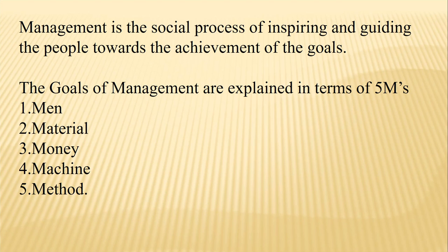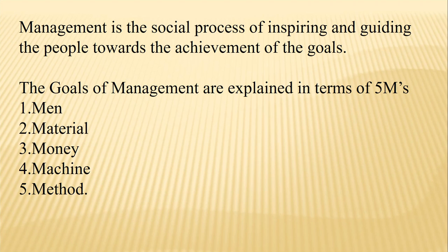We can define the goals of management in 5 M's. Men — refers to the human beings: the teachers, the students, the headmaster, the non-teaching staff, everybody inside the campus of a school. Material — the material resources, namely the building, classrooms, infrastructure, facilities, everything. Money — the amount which is spent and earned over the school campus. Machine — the machines which are utilized for functioning of the school. Then Methods — the ways of teaching, approaches of teaching, conducting examination. Thus the goals of management can be explained in 5 M's: Men, Material, Money, Machine and Method.